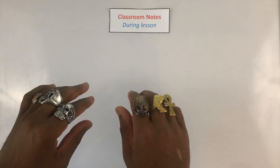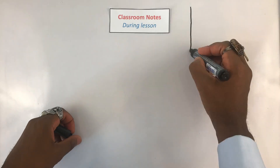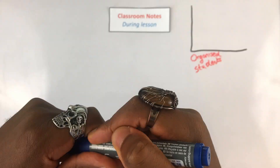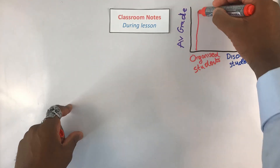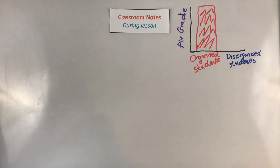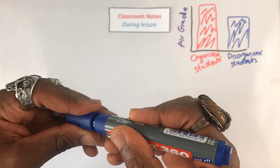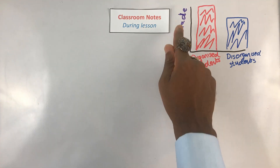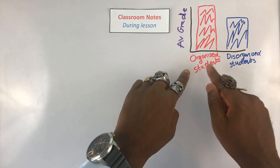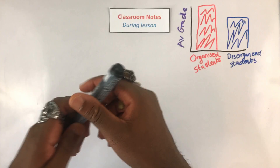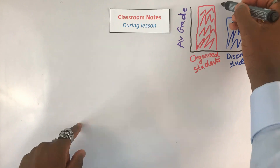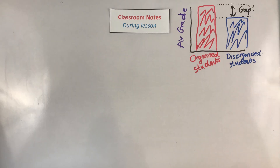There's a strong correlation between disorganization and low grades — don't play yourself. Notice how we plot our variable as a bar chart because the variable is categoric. If I just confused you with that, be sure to click on the card to check my video on how to draw your graphs.